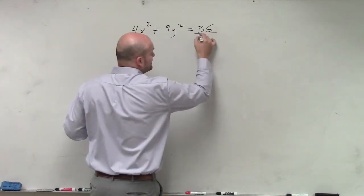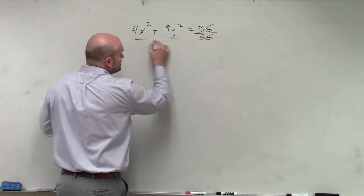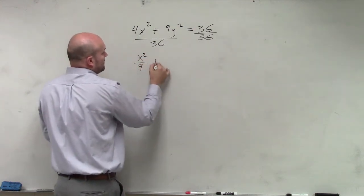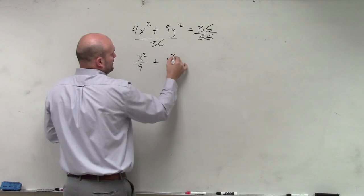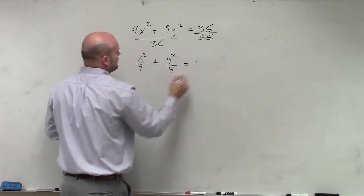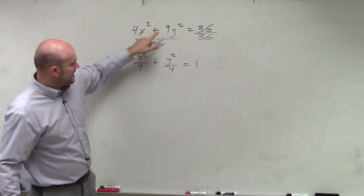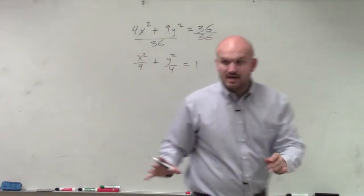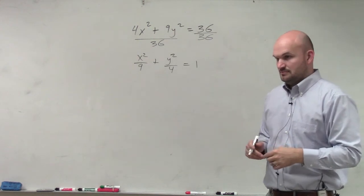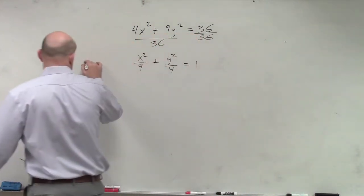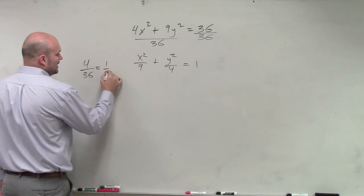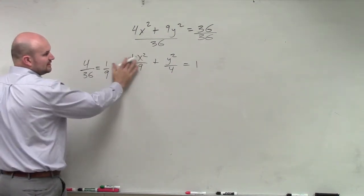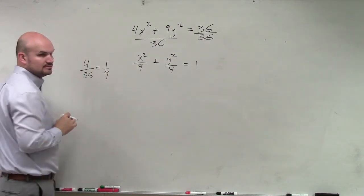So the first thing I'm going to do is divide by 36 on both sides. Therefore, I have x squared over 9 plus y squared over 4 equals 1. 4 over 36 is 1/9th, 9 over 36 is 1/4th. Does everybody see how I got the 4 and the 9 with simplifying? 4 over 36 is the same thing as 1/9th, but I don't need to write the 1 there. I can just take that away.